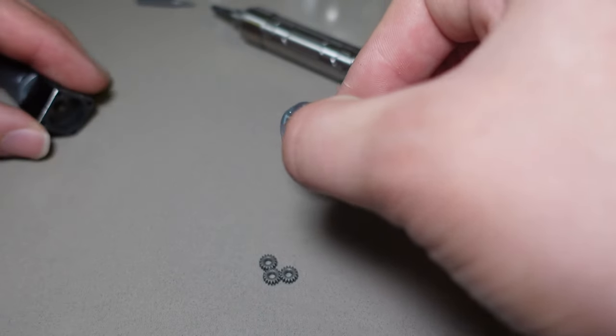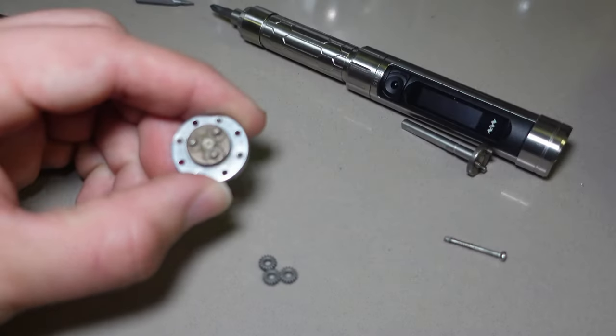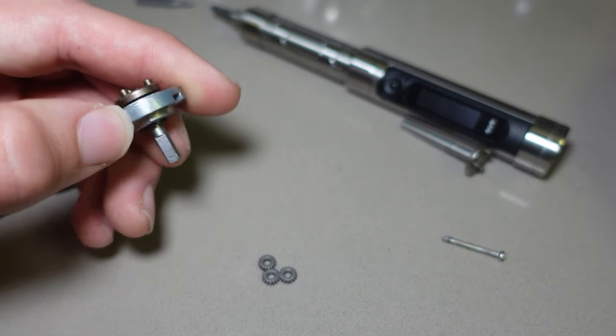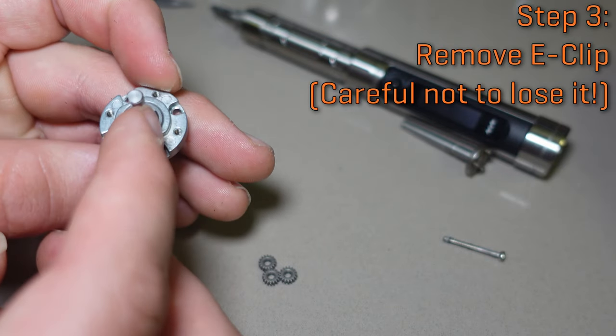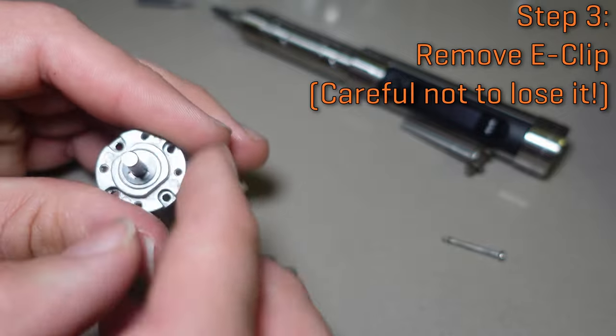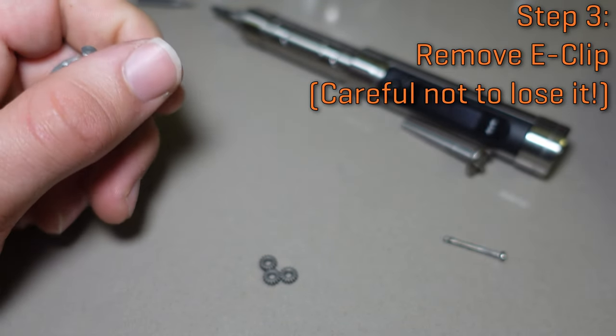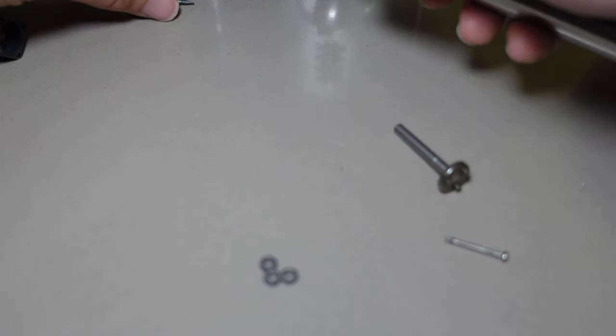Now, what you're going to need to do is set this aside, take a look at the back here, and you'll see there's the three knobs where the gears used to go. On the front side, you've got this thing here which is called an E-clip. Now, to get that out, the easiest way is to use a flathead screwdriver.